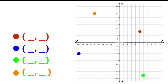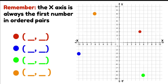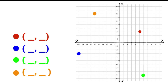Let's try working in reverse now. We have dots already marked on our Cartesian plane and we need to figure out the ordered pairs for those dots. Remember that we figure out the x-axis first and then the y-axis. Starting with the red dot: looking at where it sits along the x-axis, it's on number 5. And on the y number line, it's at number 3. So our ordered pair is 5 and 3.